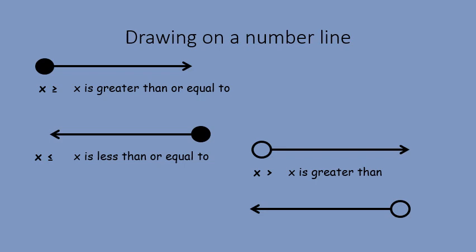We're now going to move on to drawing inequalities onto a number line. The biggest thing to remember is that if you have a greater than or equal to, or a less than or equal to, you're going to need a filled-in dot on your number line. If it can be equal to that number, the dot is filled in. If it cannot be equal to that value, the dot is not filled in.